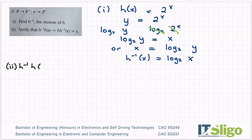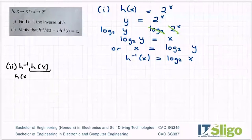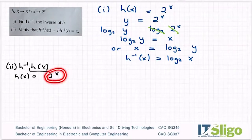So h^(-1)(h(x)). Okay, so I do h(x) first, which is 2^x. And of course I'm going to feed that in now for my x term.